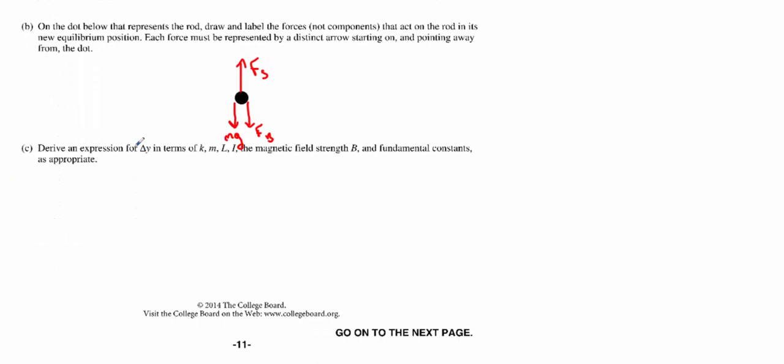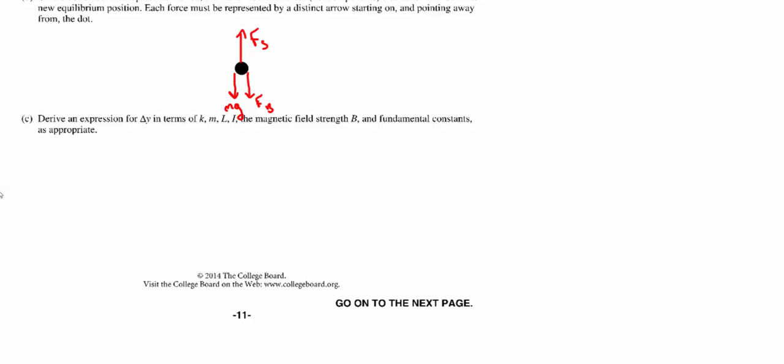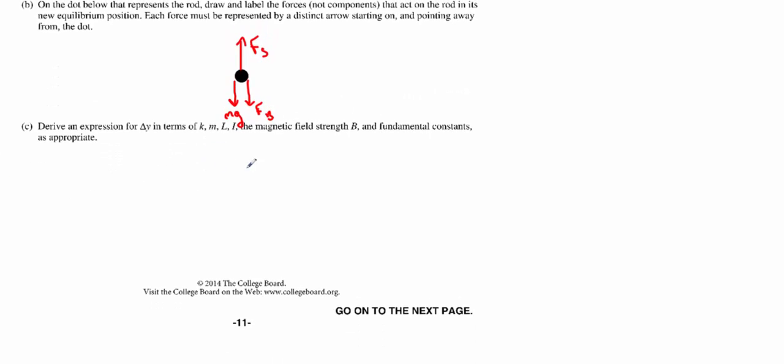Okay, part C, now we want to derive an expression for delta y in terms of K, M, L, I, all these constants. Everything needs to match the fundamentals and the constants. Remember, AP loves to do this. They love to have you take an equation, put it in a certain format, and then replace variables with given variables. If the variable you have in your final equation is not on this list or is not a fundamental constant, you're doing it wrong. So let's go ahead here and let's actually apply Newton's second law and do a dynamic setup to try to figure out my final equation.